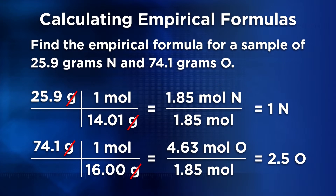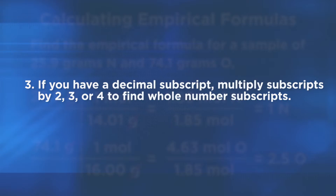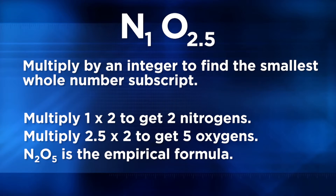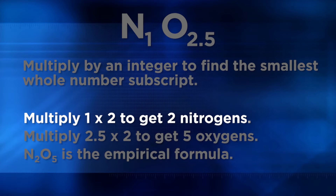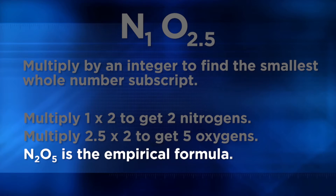We have to use the last step: multiply by 2, 3, or 4 in order to get to whole numbers — as our rhyme says, multiply until whole. If we choose 2 as the integer to multiply each amount by, we can get to whole numbers for our subscripts. 1 times 2 equals 2, so that's the subscript for nitrogen. 2.5 times 2 equals 5, so that's the subscript for oxygen. Now we finally have the empirical formula: N2O5.